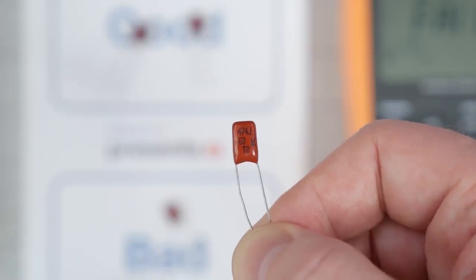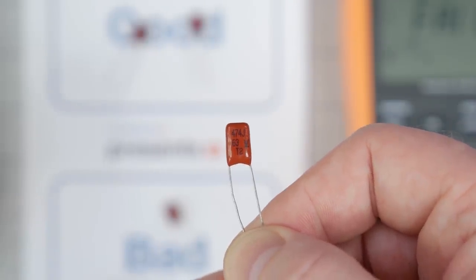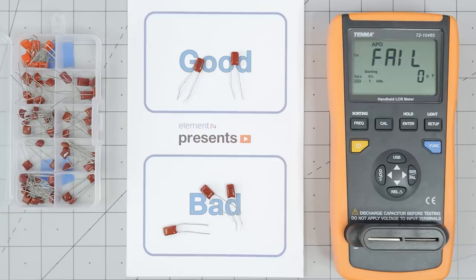By the way, these were marked as 474J, which means 470 nanofarads plus or minus 5%. As you can see, these were not really 5% tolerance. And that's what I get for not buying quality capacitors from a site like Newark. And on that realization, let's wrap up.